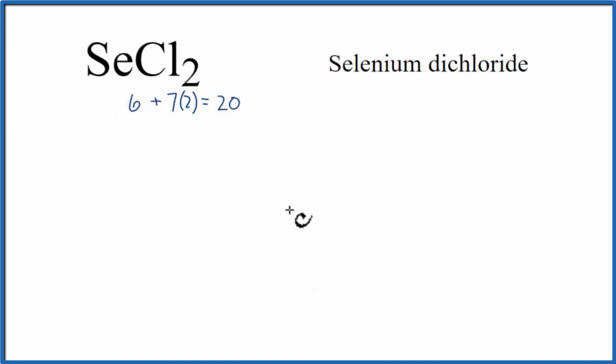We'll put Se in the center of the Lewis structure, it's the least electronegative, and then we'll put chlorine on either side. Next, we'll put pairs of electrons between the atoms to form chemical bonds, and then we'll go around the chlorine atoms to complete their octets.